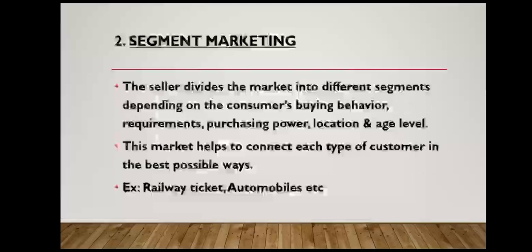For example, a railway ticket price is based on income — high income customers can choose AC, others can choose sleeper coaches with two-tier or three-tier options, and those with lower income can choose general class. For automobiles, the market can be divided into four segments: buyers looking for basic transportation, high performance, luxury, and security. If you want a luxury car, the cost is also high.